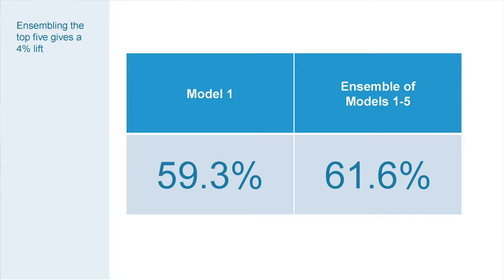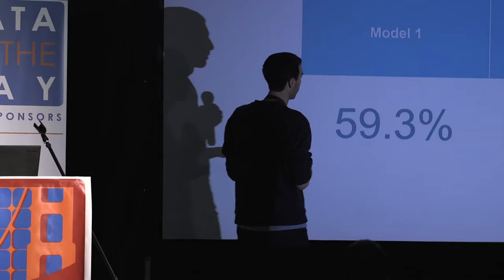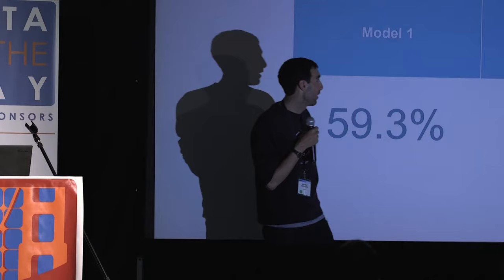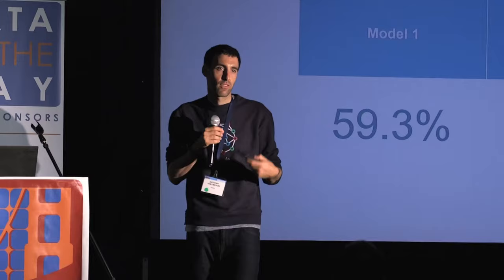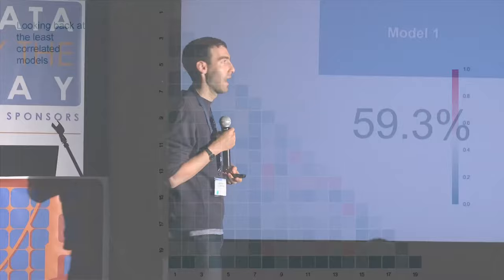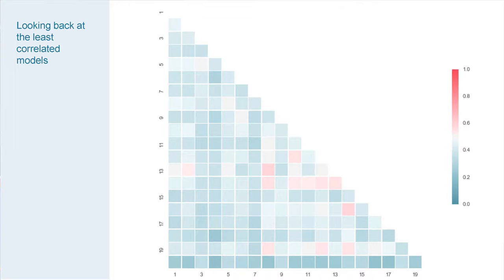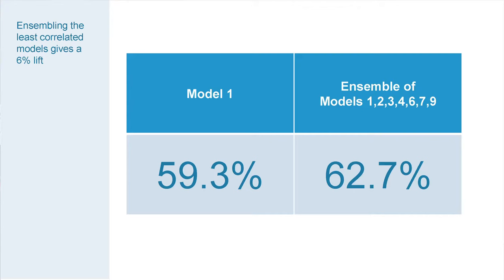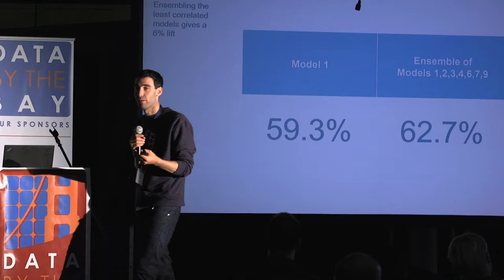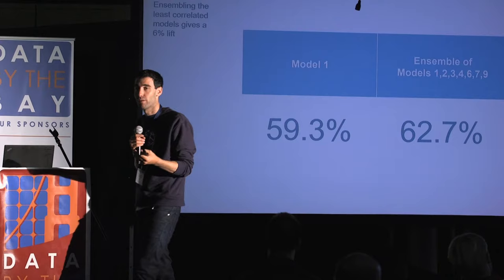If you haven't reached the frontier, you can ensemble top models together and get better performance, because they're not getting all the same things right and wrong. The best single algorithm scored 59.3%. If you ensemble models one through five, you get 61.6%. If you do something smarter — looking at models least correlated with first and second and ensembling those — you get 62.7%. When we have hit the frontier, there's no opportunity to ensemble. When we haven't, you can combine models for even better performance.